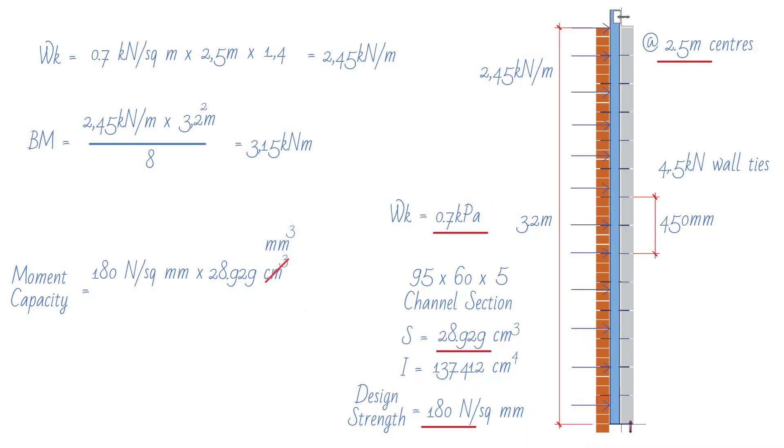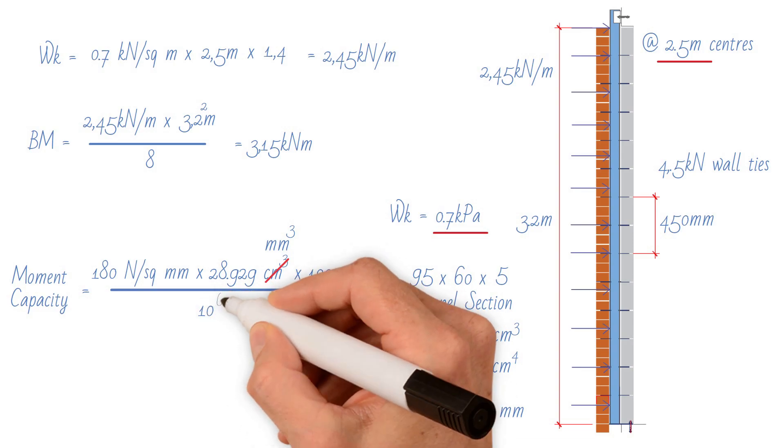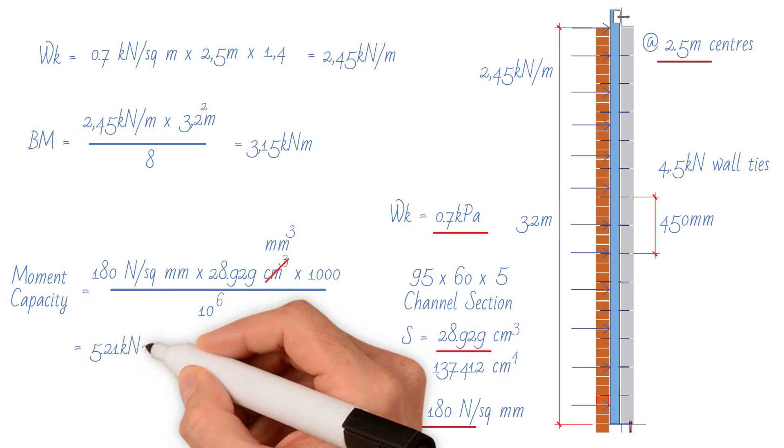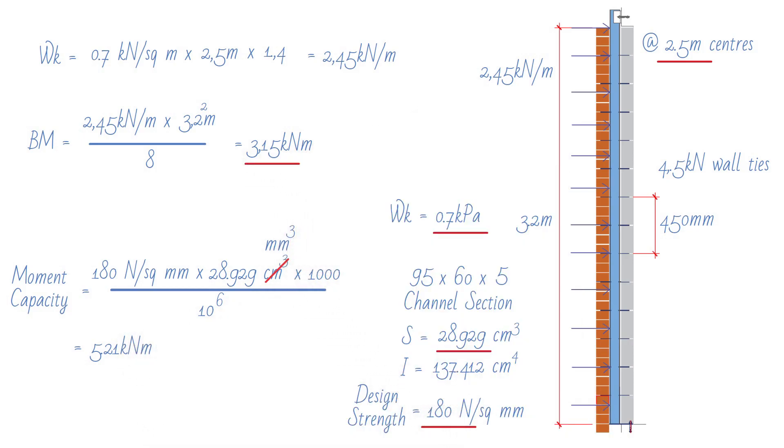To get our result in kilonewton meter, we need to divide our value by 10 to the power of 6. This gives us a value of 5.21 kilonewton meter, which is greater than 3.15 kilonewton meter.